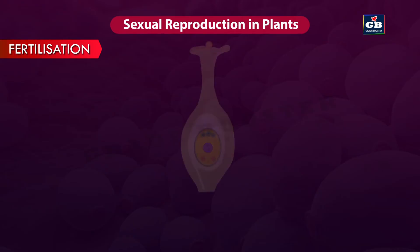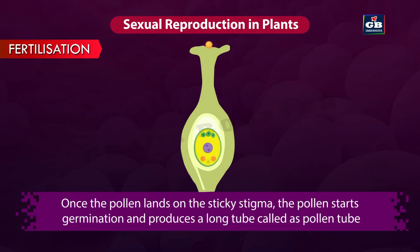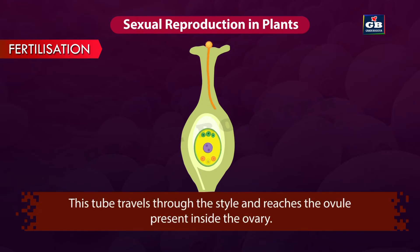Fertilization. Once the pollen lands on the sticky stigma, the pollen starts germination and produces a long tube called the pollen tube. This tube travels through the style and reaches the ovule present inside the ovary.